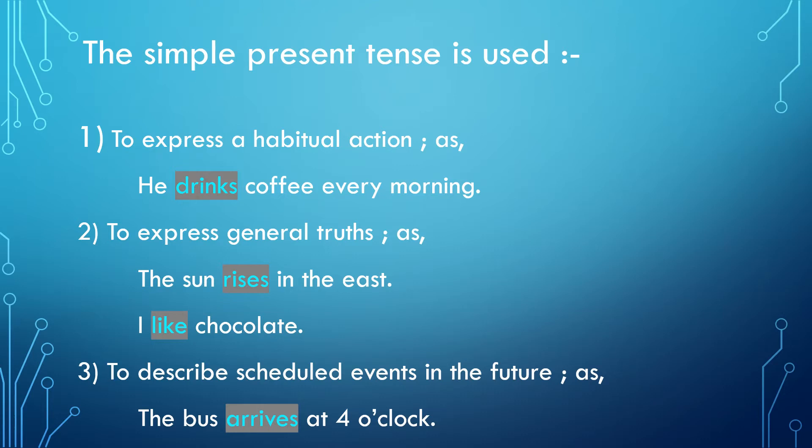In the second case, we use simple present tense to express general truths. For example: 'The sun rises in the east,' 'I like chocolate,' or 'California is in America.' So, in order to express general truths, we use the simple present tense.